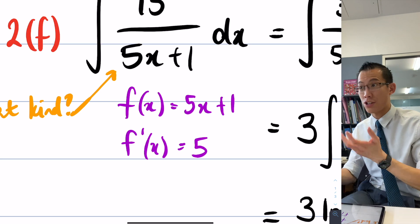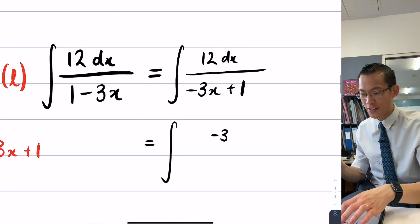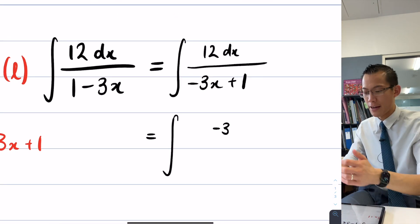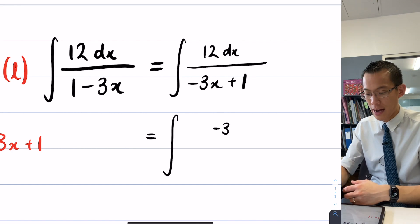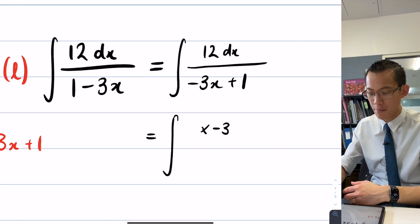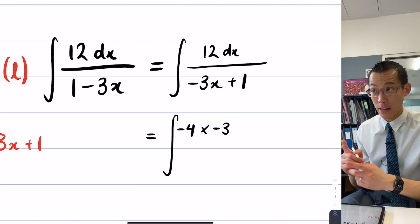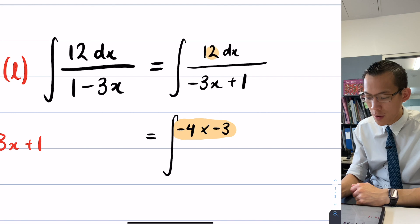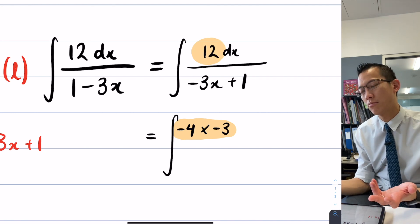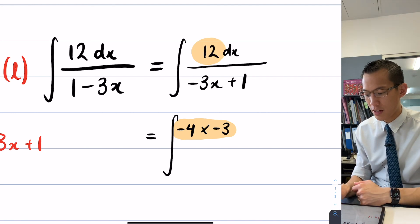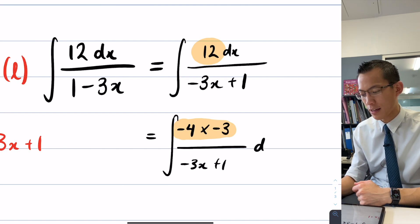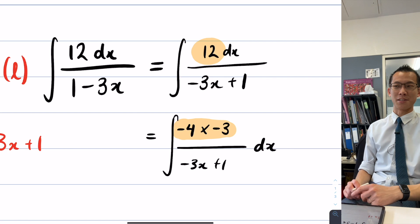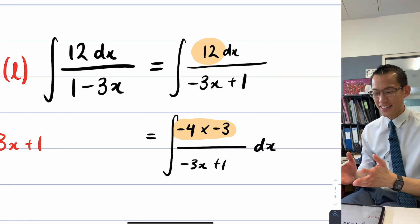Now, in order to get the f' that we want, which you already told me is negative 3, there's not a negative 3 there. I have to multiply it by negative 4. Negative 4 times negative 3. This itself is equivalent to the 12 that I started off with.